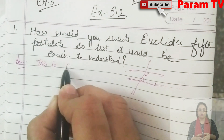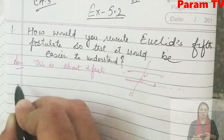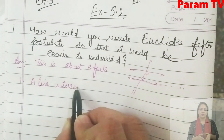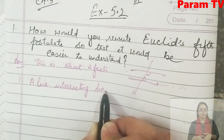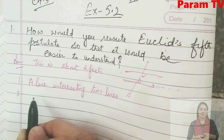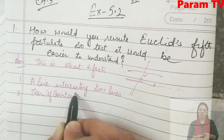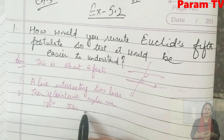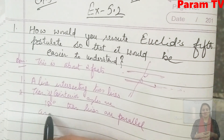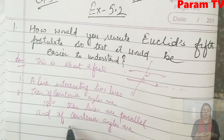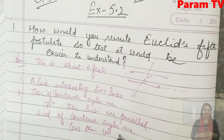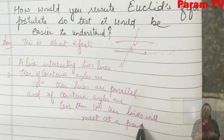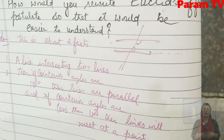This is about two facts. First, a line intersecting two lines. Second, if co-interior angles are 180, then lines are parallel. And if co-interior angles are less than 180, then lines will meet at a point. So we can write it in simple language.